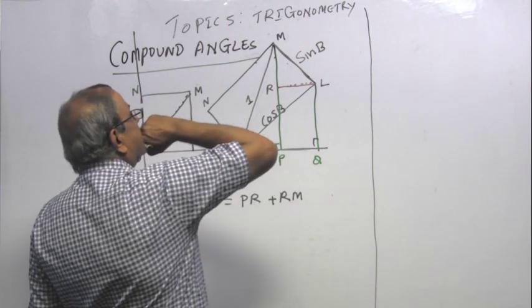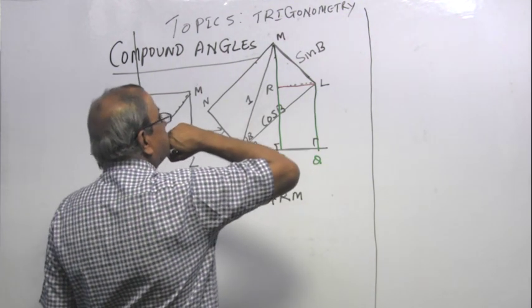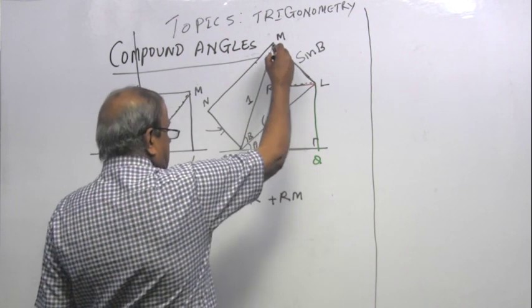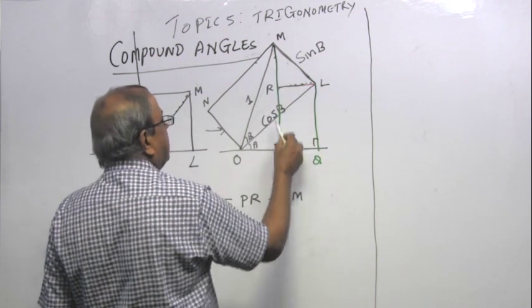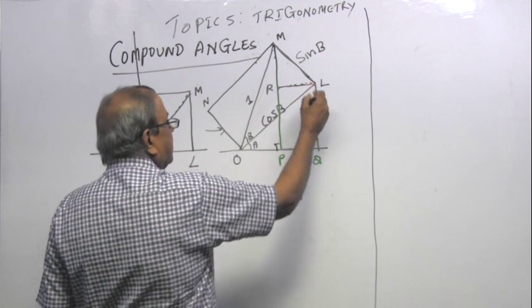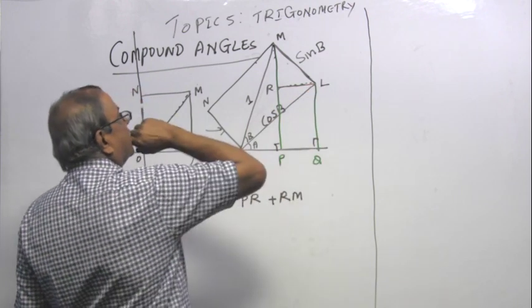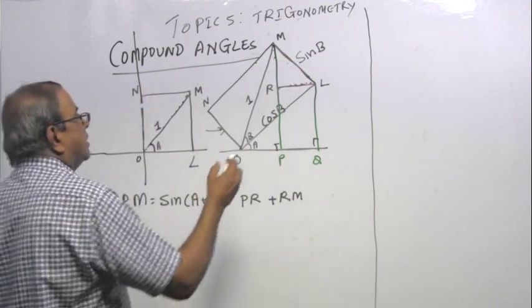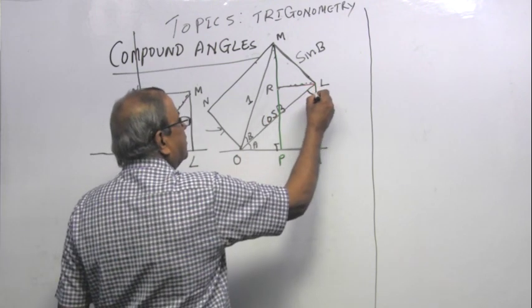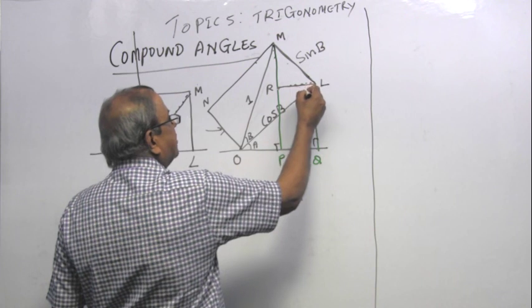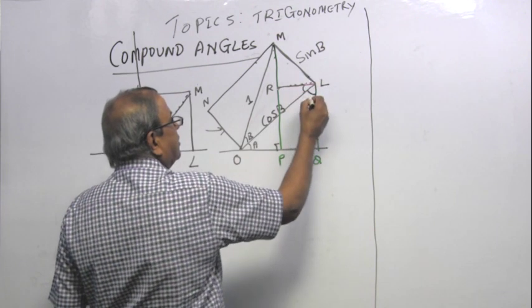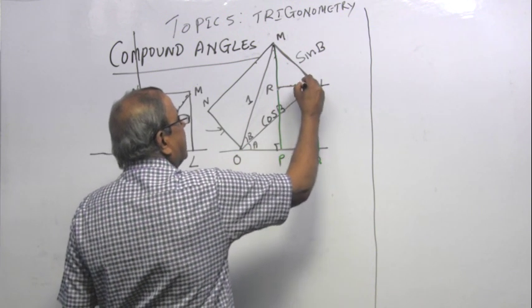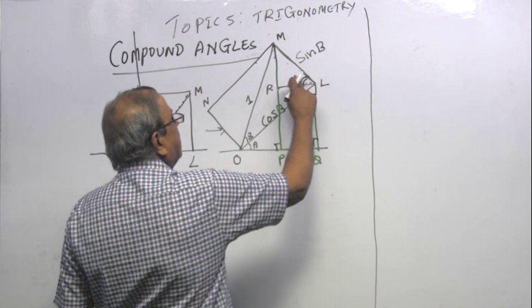Now how are we going to find what is that length MR and what is the length PR? The length PR is the same as the length. Do you agree? What can you say about this angle is A? So that angle is 90 minus A.